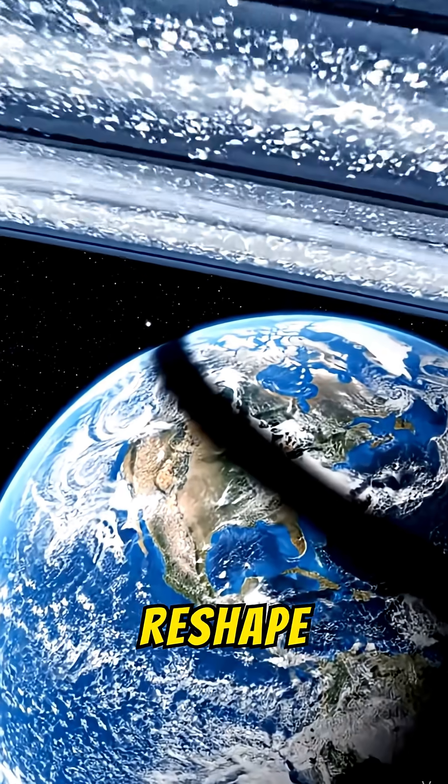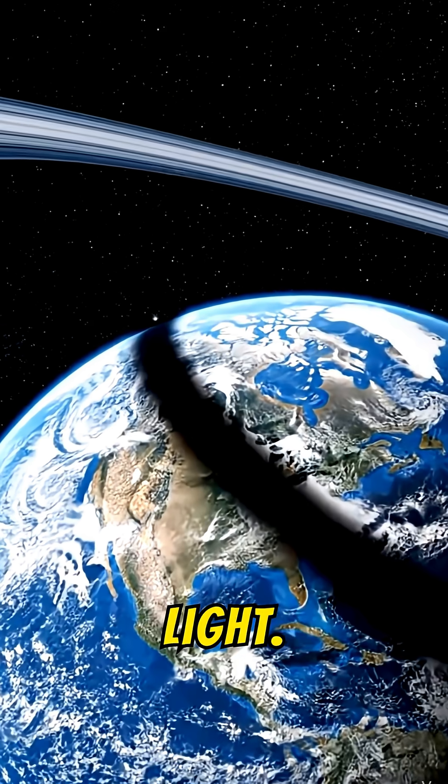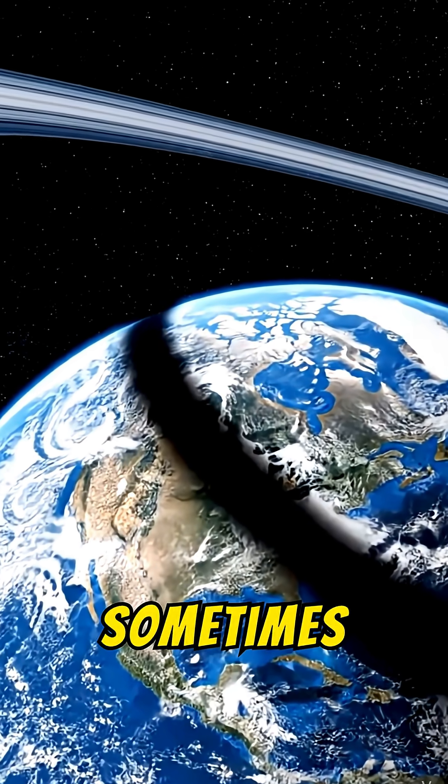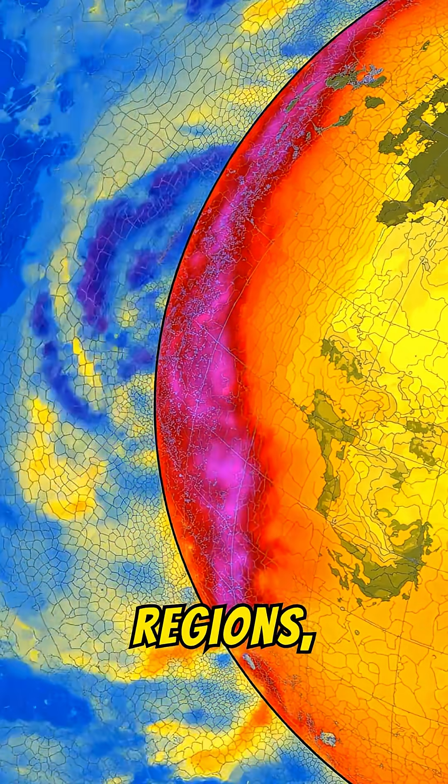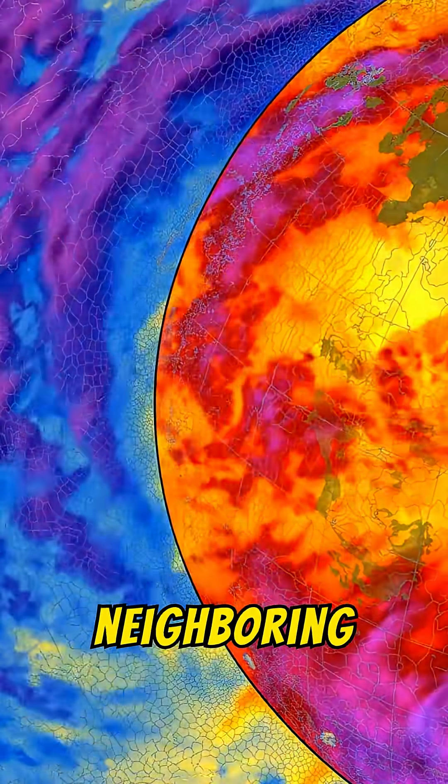These rings would dramatically reshape Earth's climate and weather, not through gravity but through light. Their shadow would sometimes fall over certain regions, cooling entire countries and creating sharp temperature differences between neighboring areas.